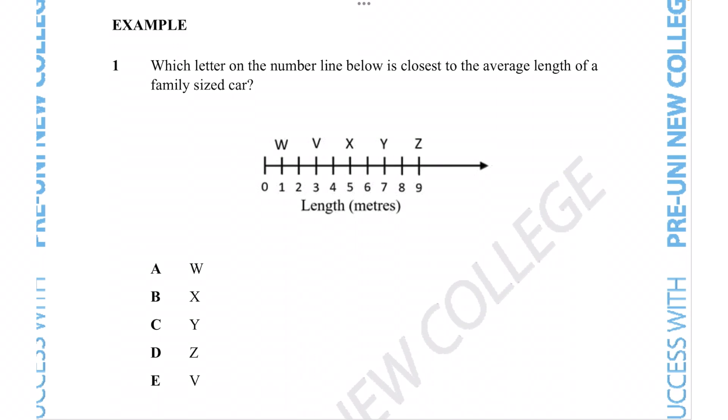This example question says which letter on the number line is closest to the average length of a family size car? So we're seeing a number line here and we can see that it is a nicer number line because all of the numbers in the intervals of the number line has actually been provided to us.